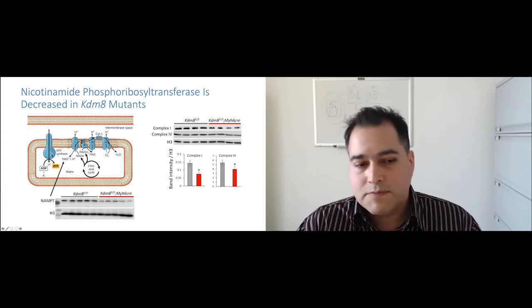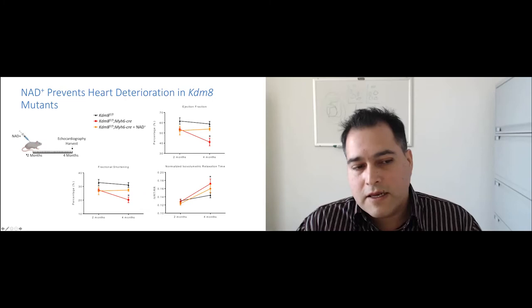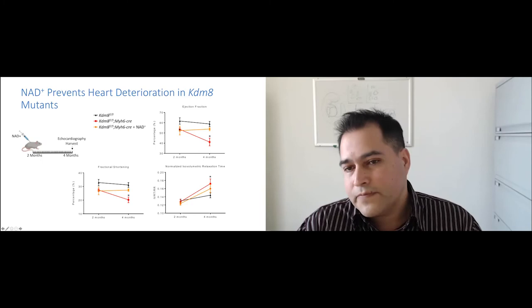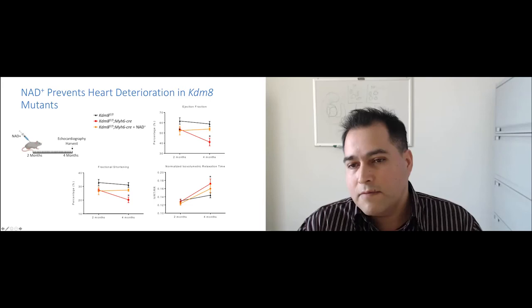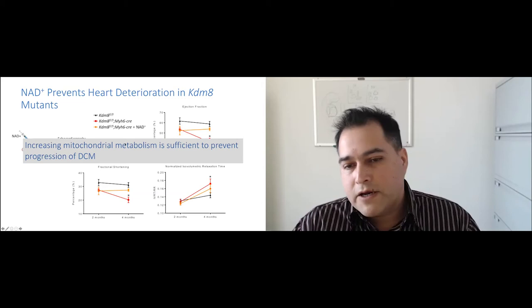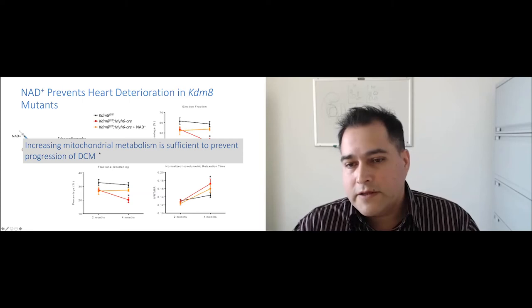So the way that Abdallah approached this is that he provided NAD in mice starting at two months or every day until four months when he analyzed cardiac function and he analyzed cardiac function in controls, in mutants, KDM8 mutants and KDM8 mutants treated with NAD. And as you can see here, the mutants from two to four months, they have a worsened cardiac function shown by a decrease in the ejection fraction and the fractional shortening and an increase in this measurement of diastolic function. And what he found is that when treating the mice with NAD, basically this function is not progressive, indicating that treatment of NAD prevents deterioration and that increasing mitochondrial metabolism is sufficient to prevent the progression of dilated cardiomyopathy in these mice.